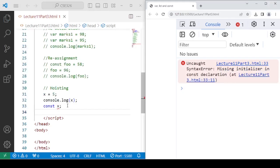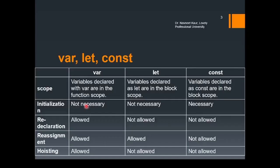So all these differences — scope, initialization, redeclaration, reassignment, and hoisting — should be clear now. I have summarized them here. Note that var can be function scoped or global scoped, while let and const are always block scoped. These differences will help you in understanding real-world concepts and in answering multiple choice questions.